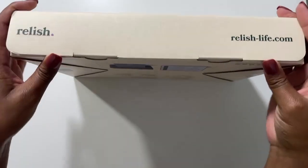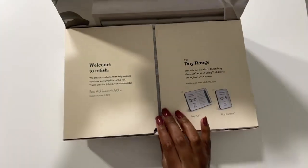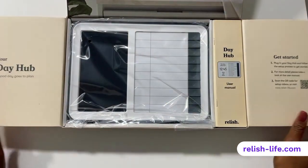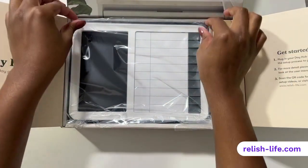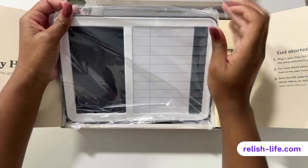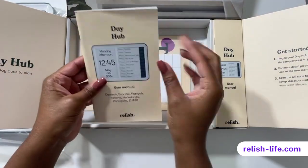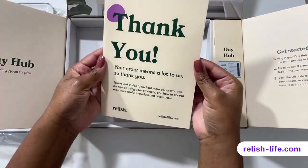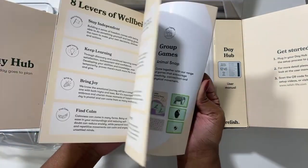Let's set up the DayHub Dementia Clock by Relish. Once we open it up, in the main section of the box we have the DayHub, the user manual for different languages, the task list cards, and a booklet to learn more about Relish and their products.